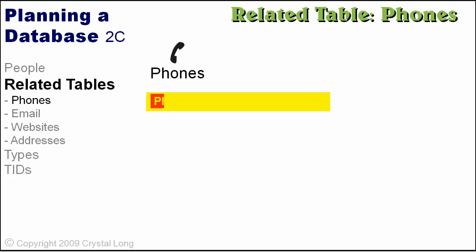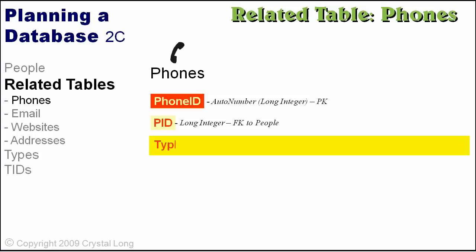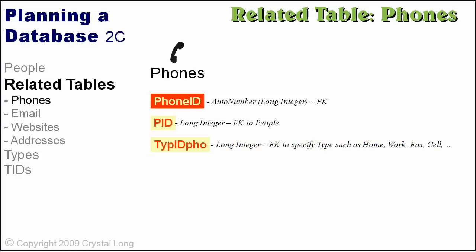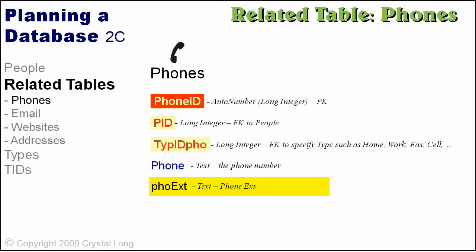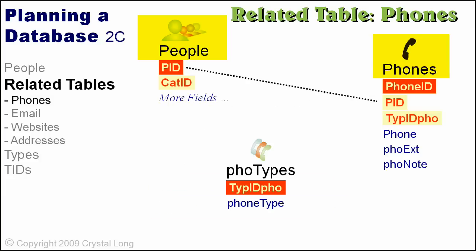The phones table has an auto-number primary key named PhoneID. The PID field is a foreign key to people so we know who the number belongs to. We can use TypeID to determine what type of phone this is, such as a home phone, work number, fax line, or cell phone. The Phone field holds the actual phone number. In case there is an extension, we will have a FoeX field. FoeNote is for a short note. People can have more than one phone number, therefore a one-to-many relationship exists between people and phones. One phone type can be used for many phone records.